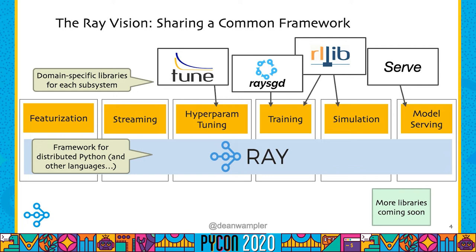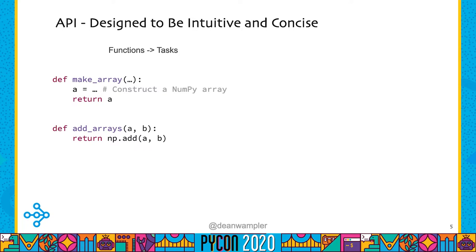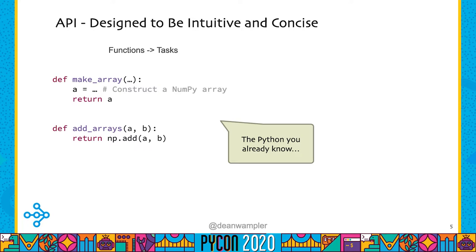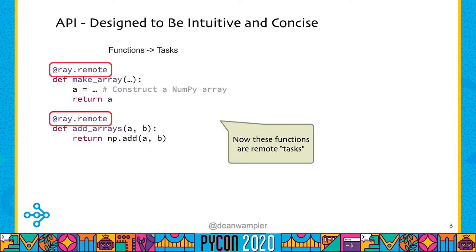Let's see what it's like to actually use Ray. It's designed to be as intuitive and concise as possible and to leverage familiar ideas — like writing functions in Python. Here's a mocked-up example with a function make_array that returns a NumPy array, and a function add_arrays that adds two arrays together. If you want to turn these into distributed tasks, all you have to do is annotate these functions with @ray.remote, and then they can execute across a cluster automatically. You'd also need to do a few imports and initialize Ray in your application.